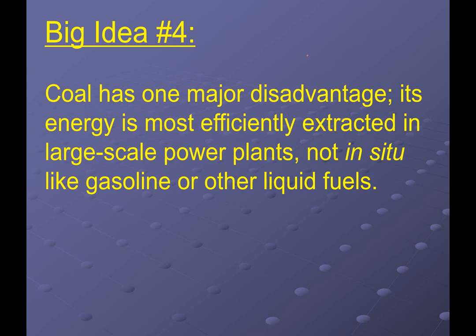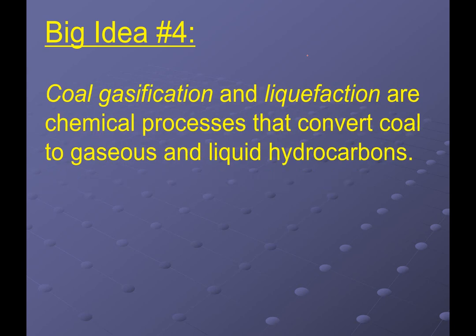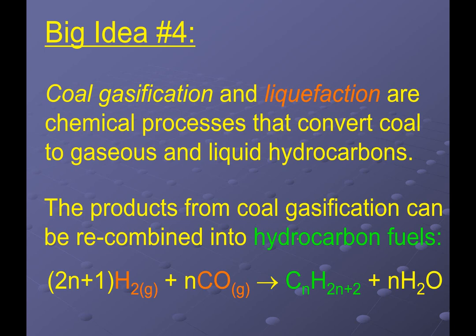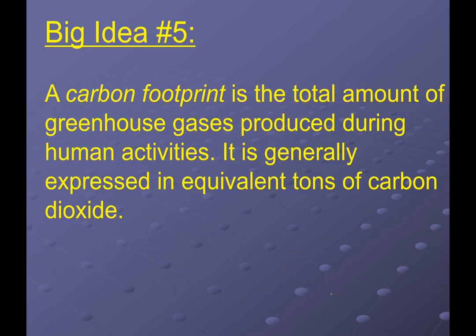Coal has a major disadvantage — you can typically only harness it in very big power plants. So we convert coal by gasifying or liquefying it into other chemicals that are easier to work with as fuels — gaseous or liquid hydrocarbons. For gasification, we take pure carbon (our coal product), react it with water, and produce H₂ and CO as primary products. These can be used as fuel themselves, or run through a further reaction to make alkanes. That's the liquefaction reaction — we're just making alkanes.